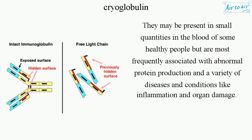Cryoglobulins may be present in small quantities in the blood of some healthy people, but are most frequently associated with abnormal protein production and a variety of diseases and conditions like inflammation and organ damage.